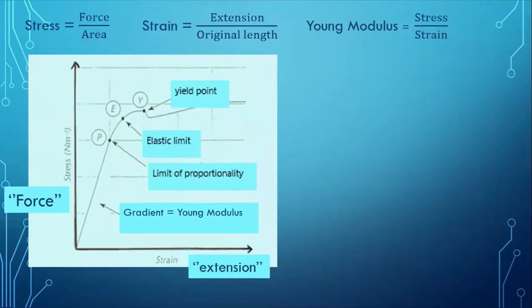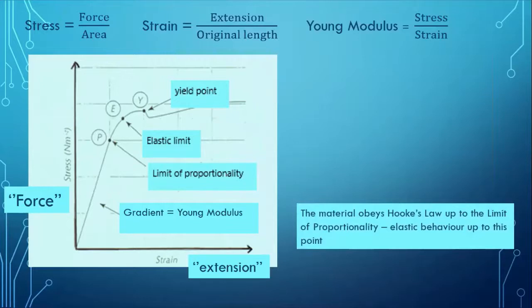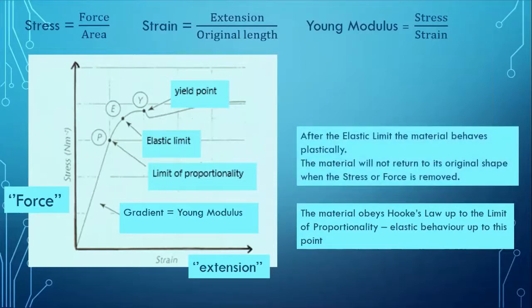And of course, the first part of it is a straight line. Constant gradient. Ah! The gradient of stress over strain is the Young modulus. But hold on. We also know that for a force extension graph, that straight line area is where it obeys Hooke's law and it exhibits elastic behavior. Now, this general shape for a metal specimen in this case is something that we will come back to. So, I've said the material obeys Hooke's law up to the limit of proportionality. Elastic behavior up to this point. After the elastic limit, that's point E, the material behaves plastically. The material will not return to its original shape when the stress or force is removed. It will be permanently stretched, if you like. Change of shape.